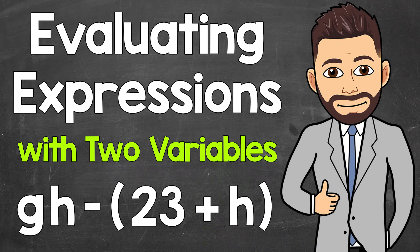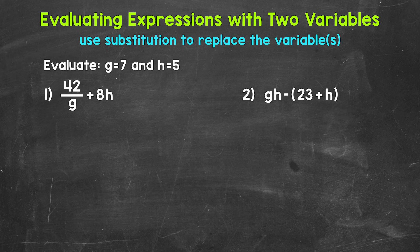Welcome to Math with Mr. J. In this video, I'm going to cover how to evaluate expressions with two variables. When we evaluate an expression, we find the value of the expression — what it equals once we work through it. For our examples, we are going to evaluate the expressions when g equals 7 and h equals 5.